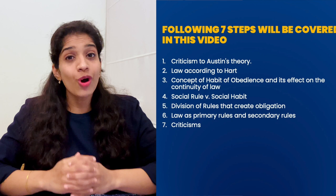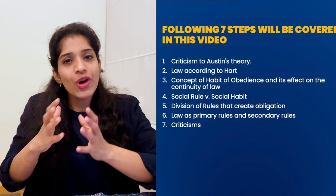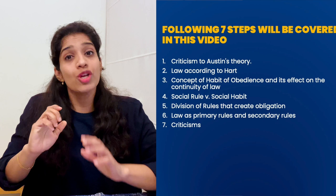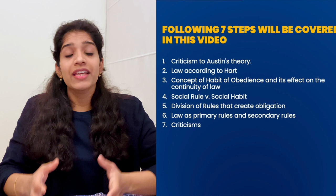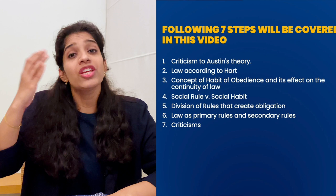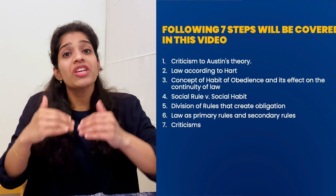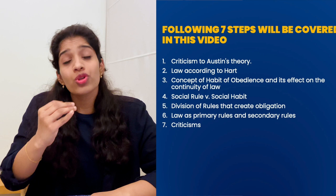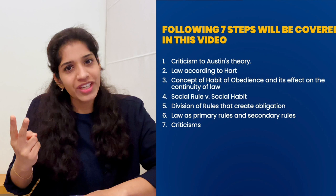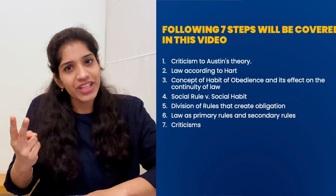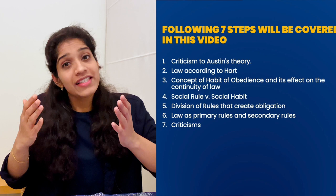We will understand these contributions in seven steps. First, we will see how Austin's theory is criticized. Second, we will see what Hart says about law. Third, Hart says that the notion of 'habit of obedience' used by Austin creates a break in the continuity of law. Fourth, the difference between social rules and social habits. Fifth, how rules create obligations — divided in two ways according to HLA Hart. Sixth, Hart divides law into primary rules and secondary rules. Seventh, criticisms of Hart.